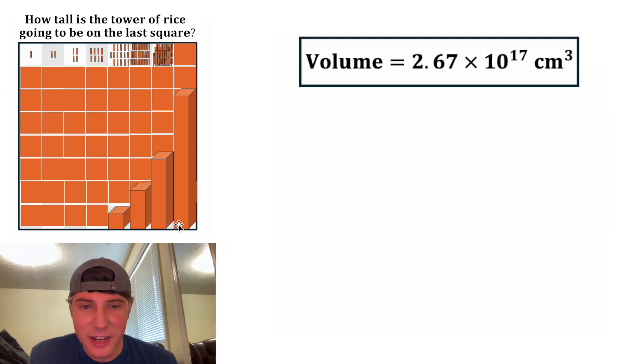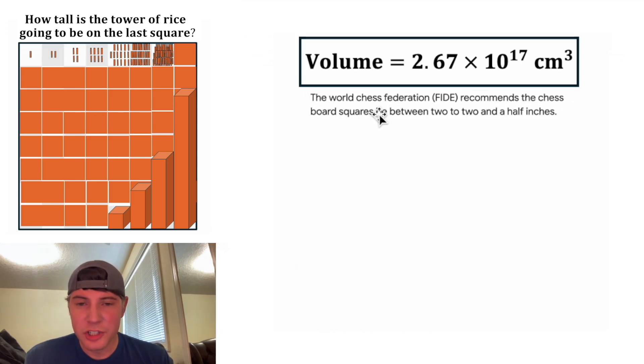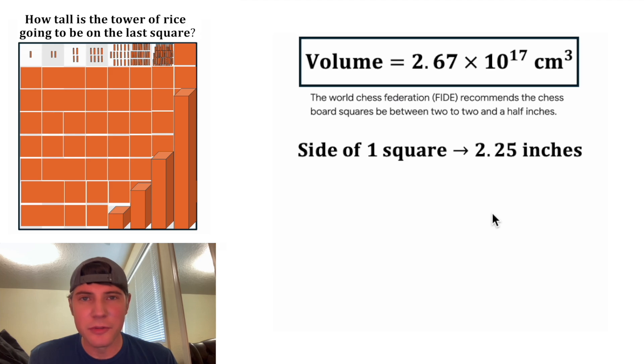Now we've got to figure out the size of our final square. So if we look up how big is a chessboard, it says here the World Chess Federation recommends chessboard squares be between two and two and a half inches. So let's go in the middle of that range and have the side of each square be 2.25 inches.